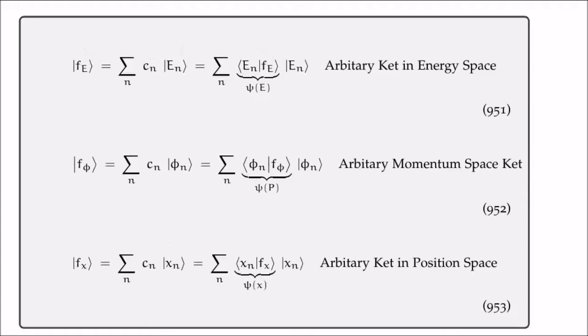So we can do the same procedure with the momentum eigenstates and the position eigenstates. This ket f sub phi is an arbitrary abstract quantum state living in momentum Hilbert space and it is described by a linear combination of the momentum eigenstates. And the same thing can be said for position.